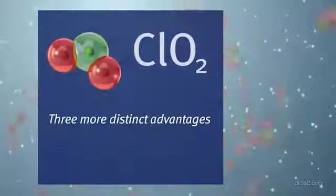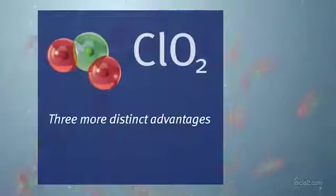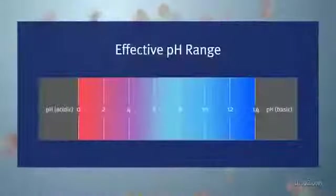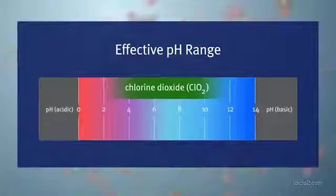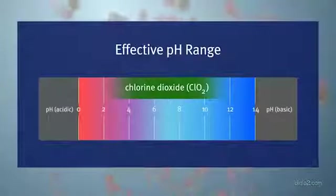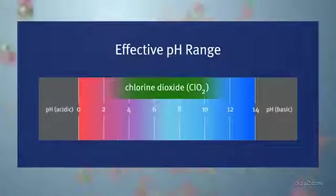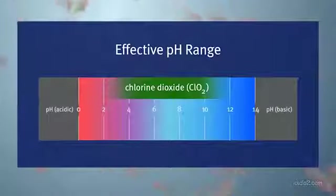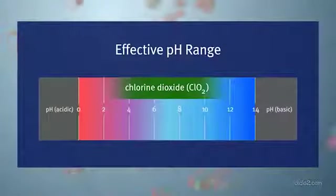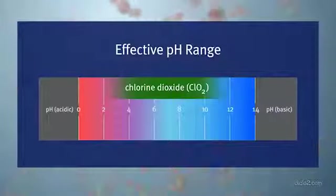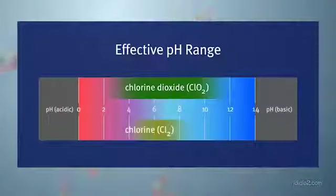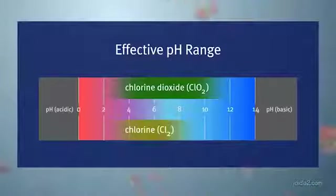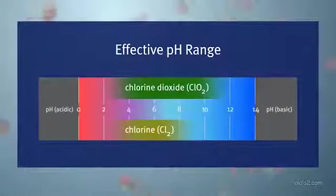In addition to its oxidative selectivity, chlorine dioxide has three more distinct advantages over chlorine as an oxidizing biocide. First, because ClO2 does not undergo hydrolysis in water but remains a dissolved gas, it is able to maintain its oxidative properties over a broad pH range, from very acidic environments below pH 4 to basic environments of pH 10. Chlorine, on the other hand, has a narrow pH efficacy range and is a relatively ineffective antimicrobial in alkaline environments.